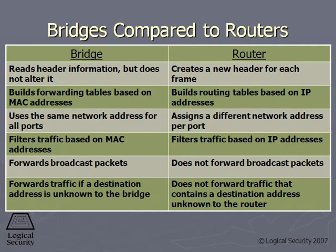The bridge will use one IP address for all of its ports, where the router will use individual addresses per port because a router is connecting different domains. You'll also need to know which ones forward broadcast and collision data. The bridge will not forward collision data — that's useful when you have too many collisions and too many computers on a segment. The bridge won't forward collision information, but it will forward broadcast. The router, however, will not forward either collision information or broadcast, because they're completely different network segments.